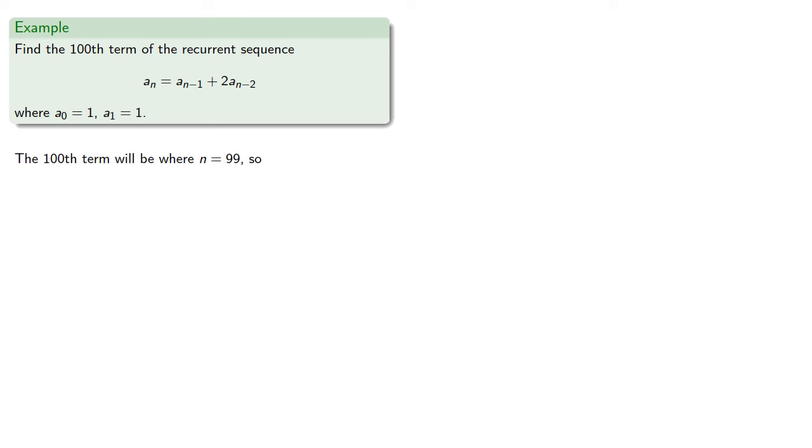So the 100th term will be where our index is equal to 99. Remember, 0 is our first term, and so our formula tells us that it will be computed directly.